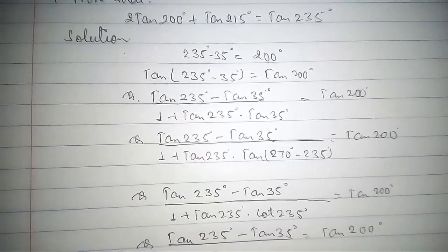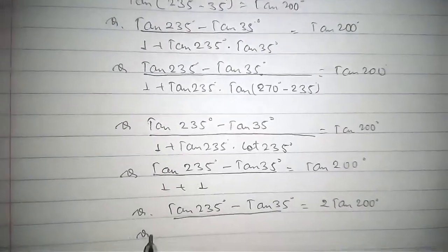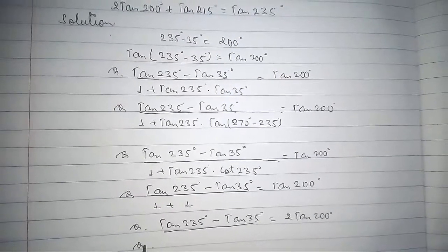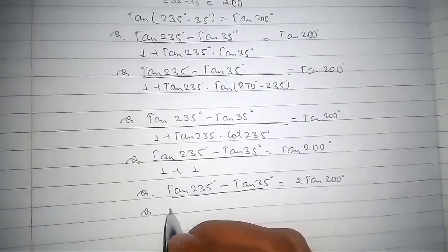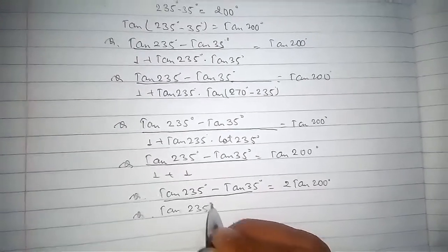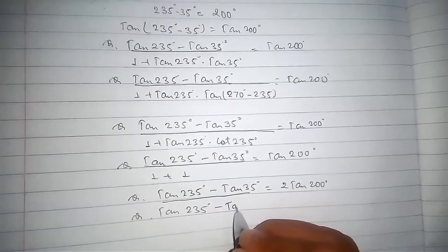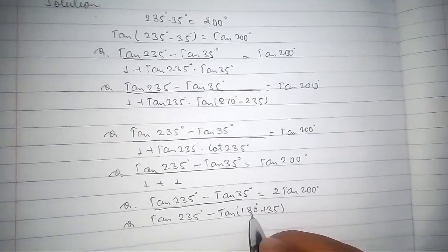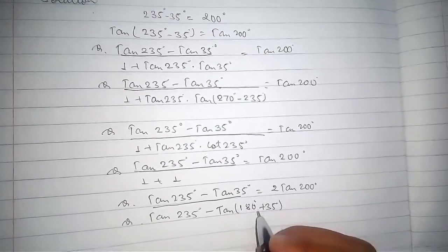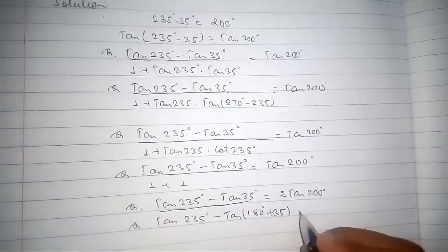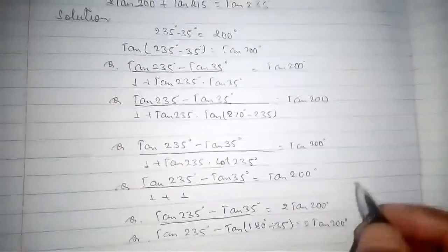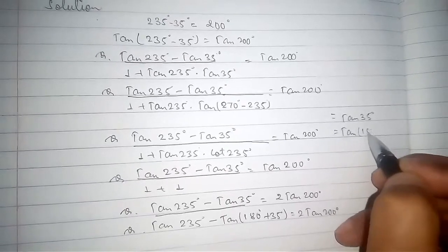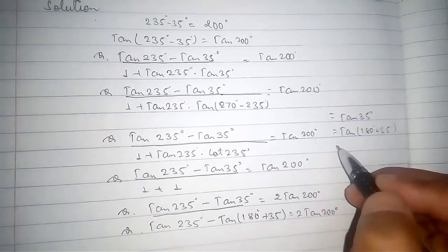See what we have is tan(235°) and tan(200°). We need to express tan(35°) in terms of tan(215°). For this, tan(235°) minus tan(35°) can be written as tan(180° + 35°). Because tan(180° + θ) equals tan(θ), so we write 180° + 35° as tan(35°). This equals tan(200°).